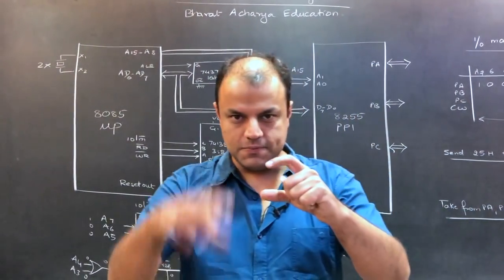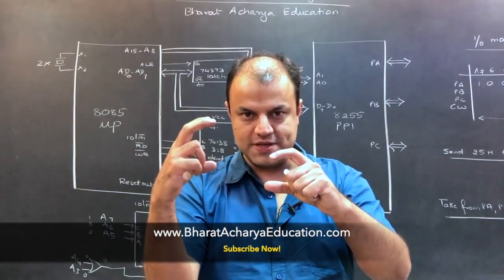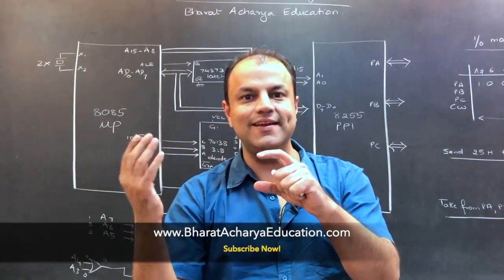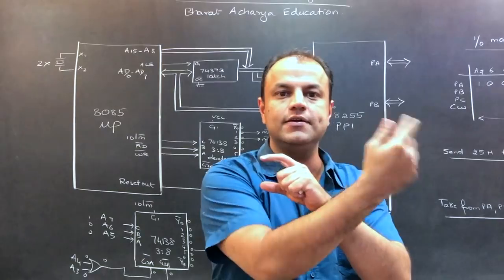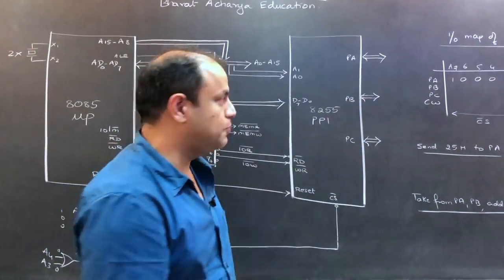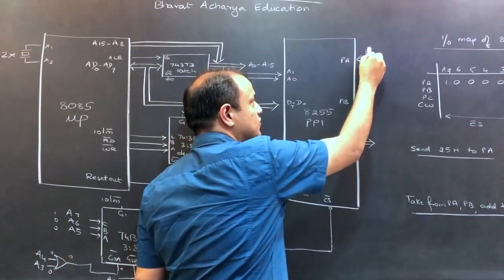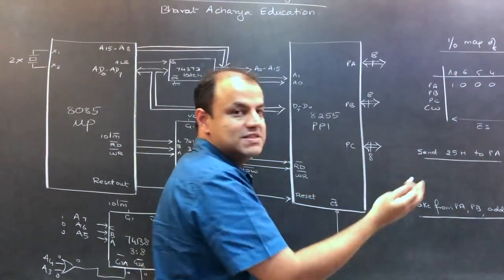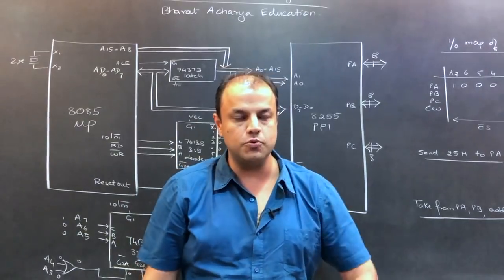It's the interface between the MUP, your microprocessor and IO devices. On this side, it's connected to the microprocessor. On this side, it's connected to IO devices on various ports. 8255 has three ports: port A, port B, port C. All ports are 8-bit ports. All ports are bi-directional, which means they can be used as input ports as well as output ports.